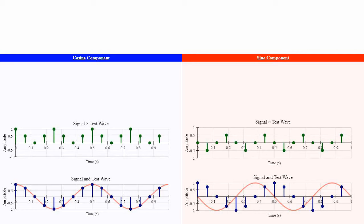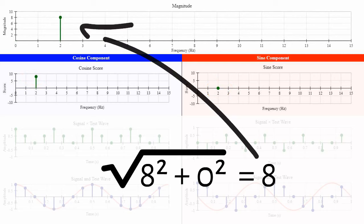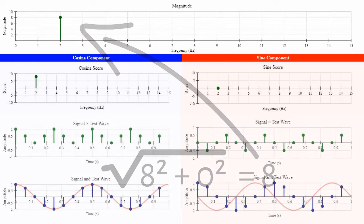Now, it adds together all the points on the multiply graph to get a score which indicates how much each component contributes to the signal at this frequency. Combining these scores using Pythagoras theorem tells us the magnitude of this frequency in the signal, as we learned in the last video. I have linked to the video in the description.